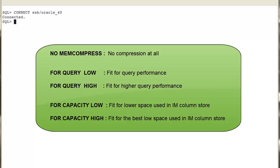FOR CAPACITY LOW corresponds to an in-memory algorithm fit for lower space usage in the IM column store, providing a balance between high compression and better query performance. If capacity is specified without low or high, it defaults to FOR CAPACITY LOW. FOR CAPACITY HIGH corresponds to an in-memory compression algorithm that compresses data at a higher ratio than low, therefore providing higher storage savings in the IM column store.